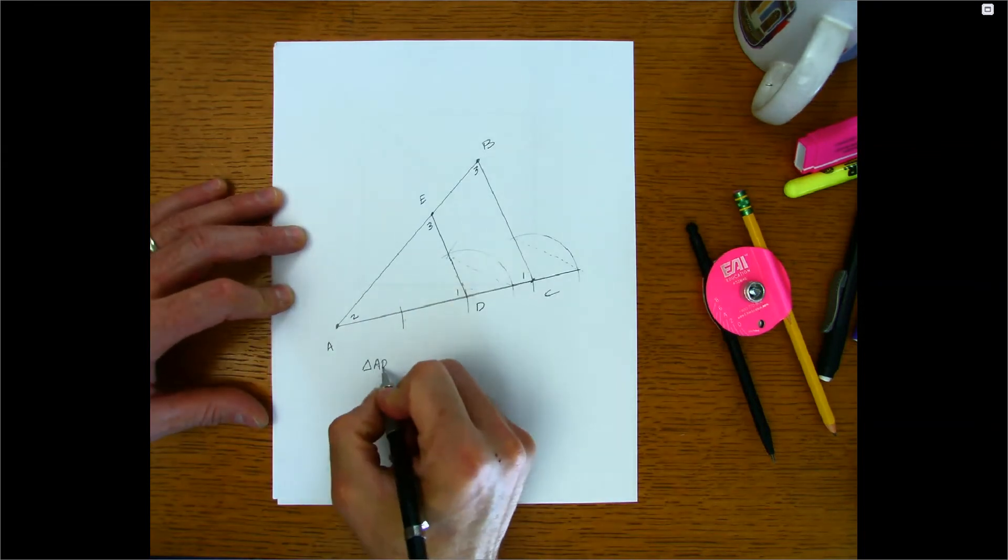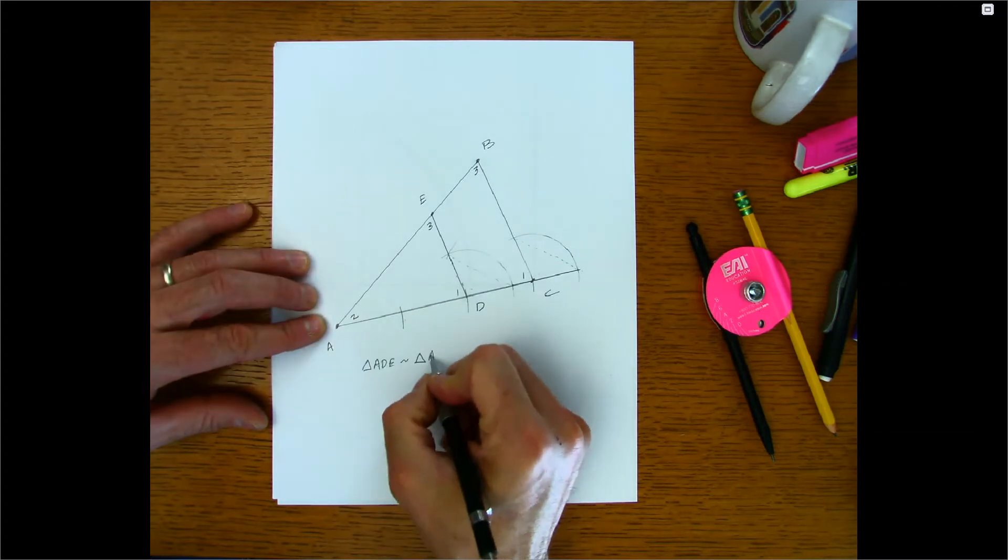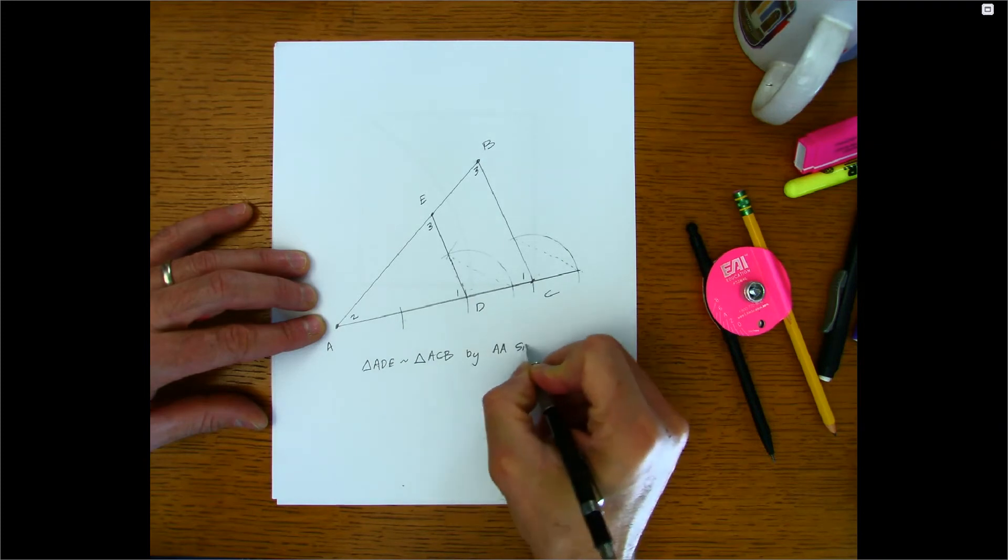So what we can see is that we have triangle ADE similar to triangle ACB by angle-angle similarity.